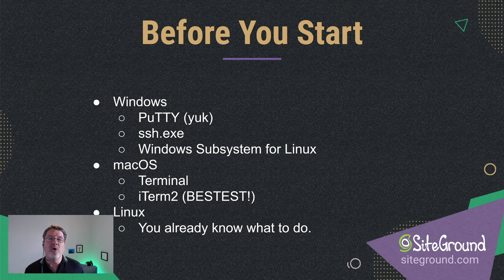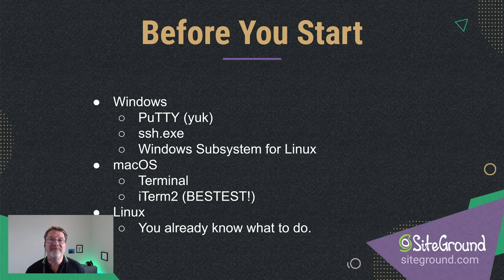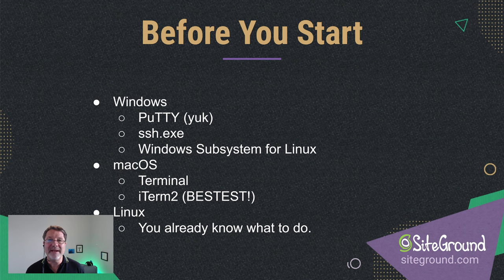If you're on macOS, you have a terminal called Terminal, and you can find it in your applications utilities directory. It's not great — I suggest, if you're going to be doing this for any amount of time, that you go out and download iTerm 2. It's open source and by far a much better user experience than the regular macOS terminal. And of course, if you're using Linux already, you know how to do this stuff — why are you watching this webinar? Go watch something else.